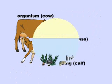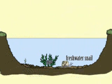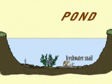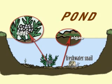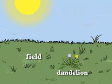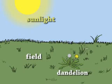For example, a freshwater snail lives in a pond where there is plenty of algae to feed on and where it can lay its eggs in the water. A dandelion lives in a field where there is plenty of sunlight for it to grow and where the wind can easily disperse its seeds to the surrounding area.